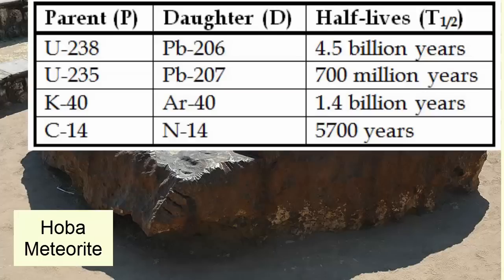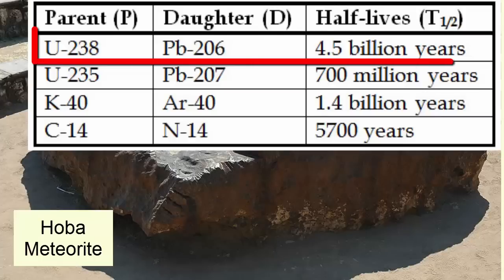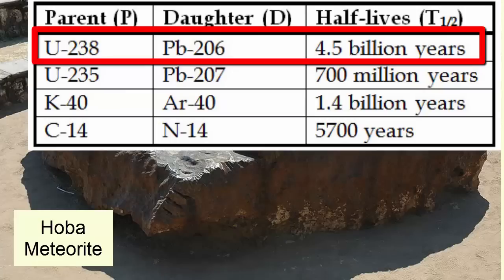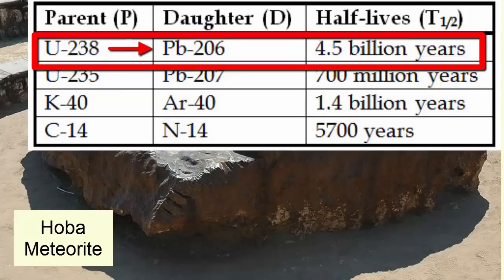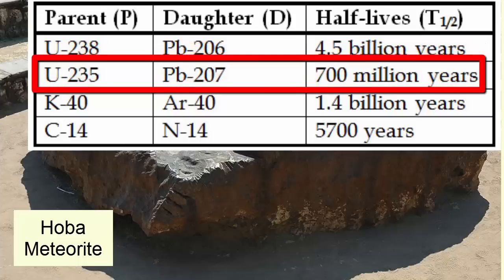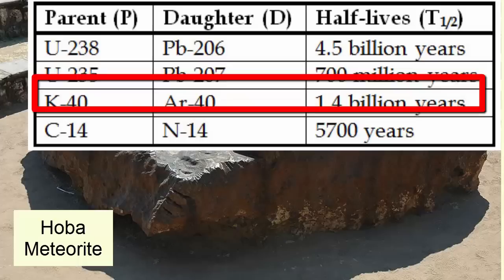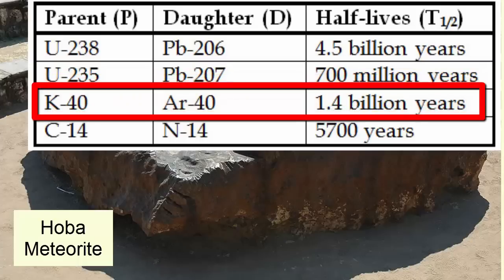Fortunately, there are a number of other pairs, such as uranium-238, which decays to lead-206 and has a half-life of 4.5 billion years; uranium-235, which decays to lead-207 and has a half-life of 700 million years; and potassium-40, which decays to argon-40 and has a half-life of 1.4 billion years.